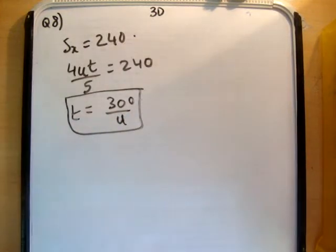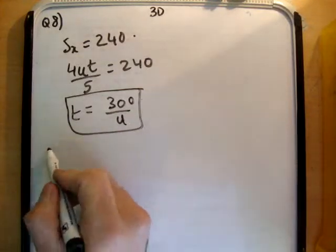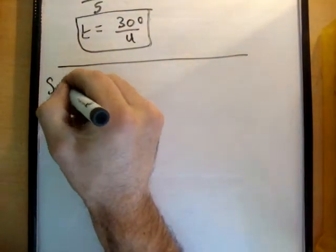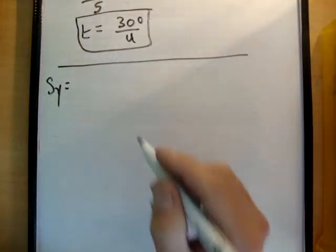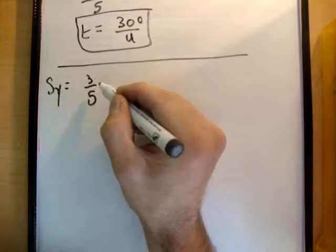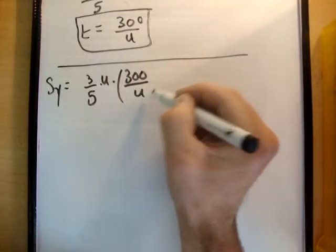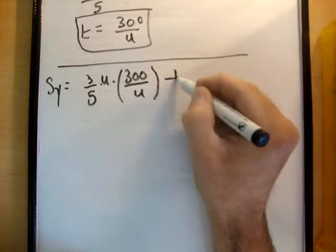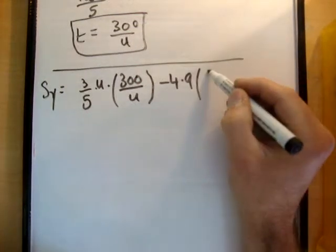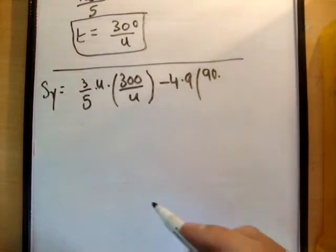So when t is equal to 300 over u, we are after reaching the wall. So let's find out what s sub y is equal to. So we have 3 over 5 times u times t which is 300 over u minus 4.9 times 90, it's squared. So we have 90,000 over u squared like that.